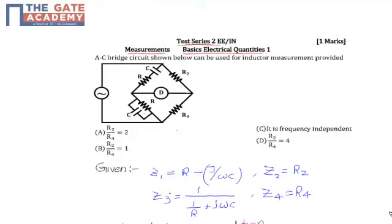In the given question we have to find the condition for R2. Option A: R2/R4 equals 2. Option B: frequency independent. Option C: R2/R4 equals 1. Option D: R2/R4 equals 4. We have to find what is the condition for this. We have to first